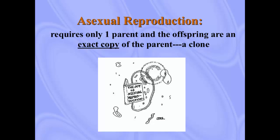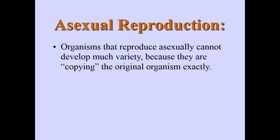Asexual reproduction requires only one parent and the offspring are an exact copy of the parent. There are certain animals that can clone themselves through the method of asexual reproduction. Organisms that reproduce asexually cannot develop much variety — meaning genetic variety — because they are copying the original organism exactly. So the traits that belong to the parent organism will belong to the offspring.